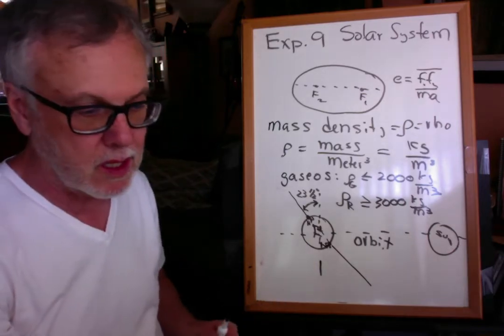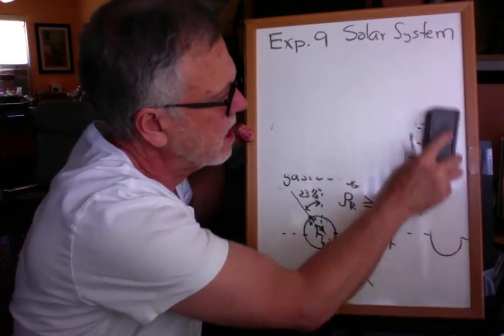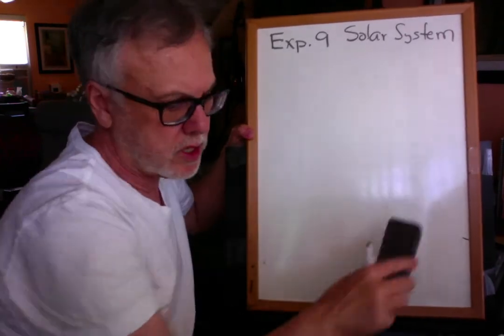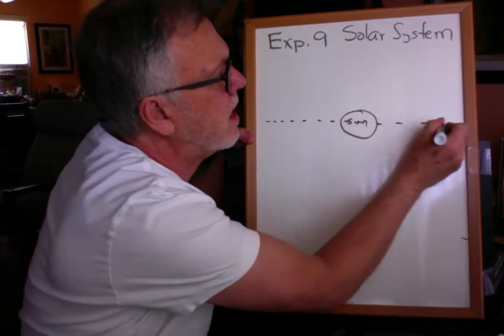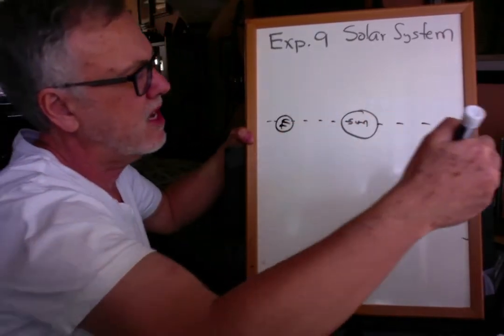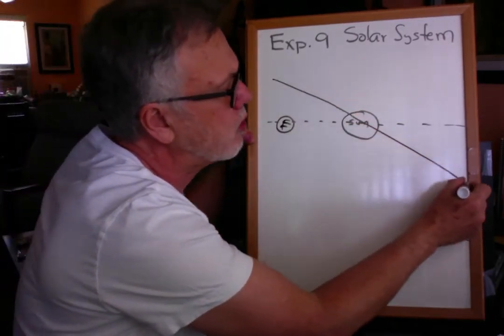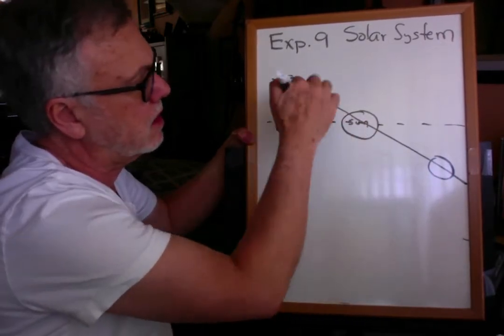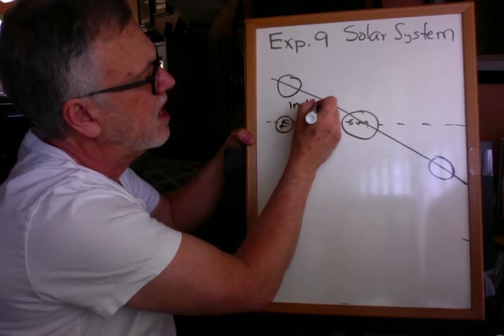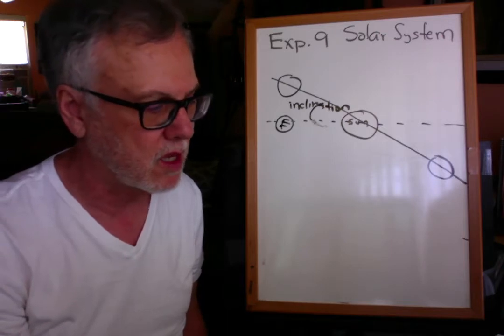The inclination: if here's the sun and here is the orbit of the Earth around the sun, the inclination describes how far off from our orbit other planets' orbits are. So basically another planet would orbit at an angle like this, and that angle is their inclination — how much their orbit differs from ours as they go around the sun.